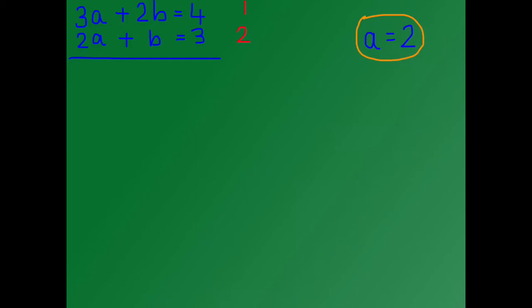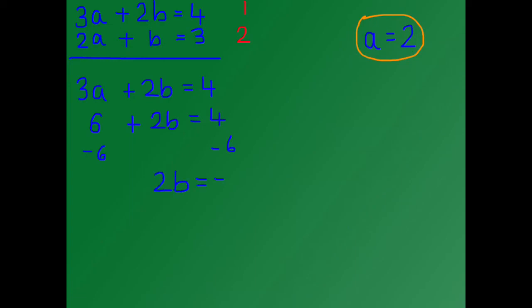We have now found a value for a. We can substitute this value of a into one of the equations to find out what b is. So I'm going to use equation number 1: 3a plus 2b equals 4. a is 2, so 3 times 2 is 6, plus 2b equals 4. We're going to subtract 6 from both sides, and we're left with 2b equals minus 2. Dividing both sides by 2 gives us b equals minus 1.